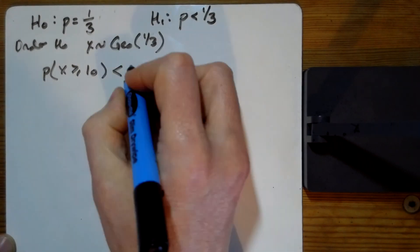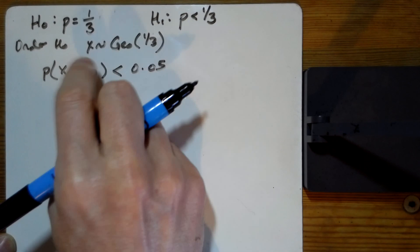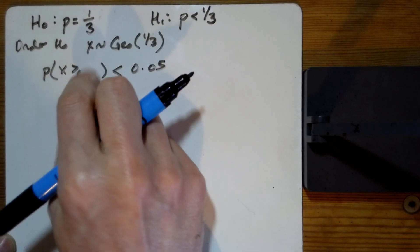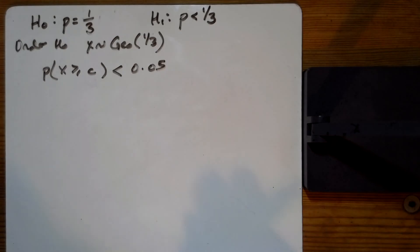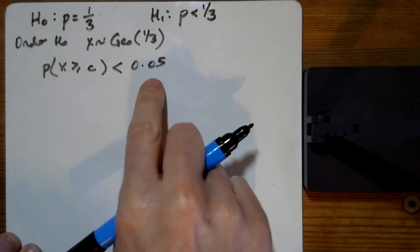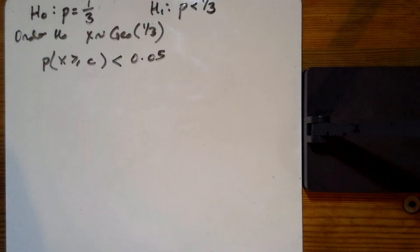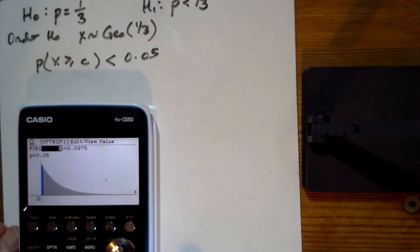And we are doing a five percent test. So it's not a 10 there. That's a C for a critical value there. How many goes will it take until we say that we will change our minds? So let's stick that in the calculator.